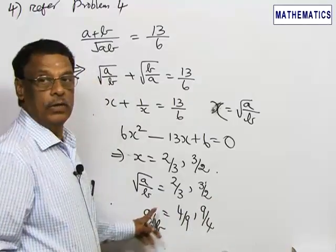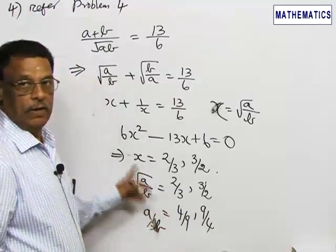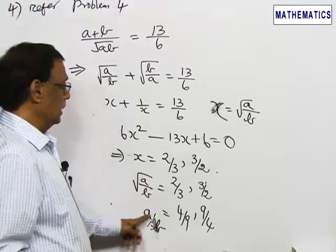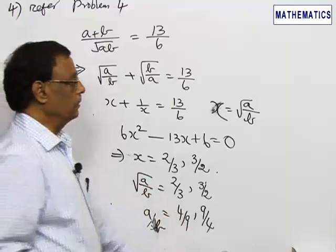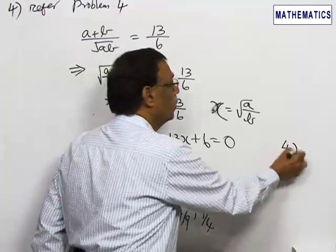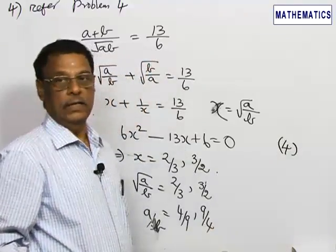These are the two ratios of A and B. That is what is asked. You get the correct answer as 4 by 9 which is the option 4, option 4 is the correct answer.